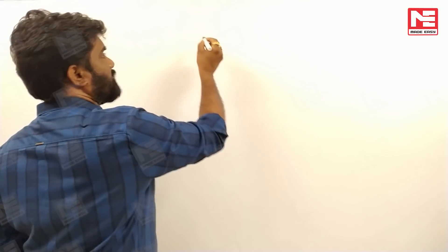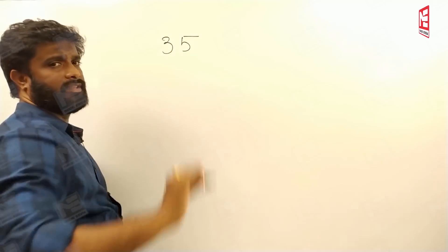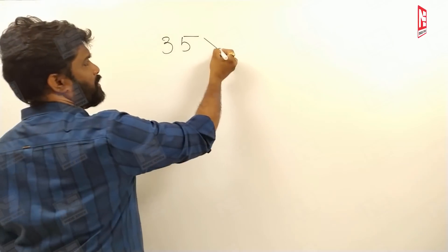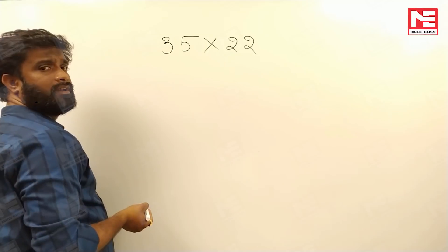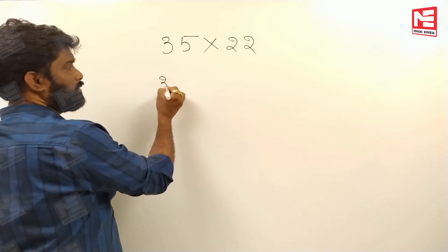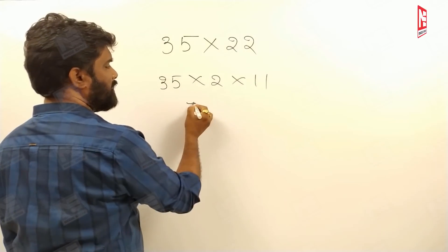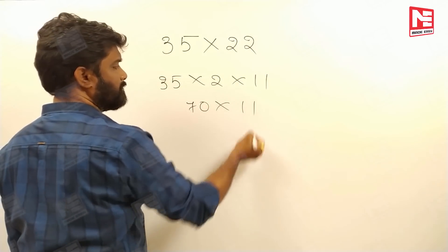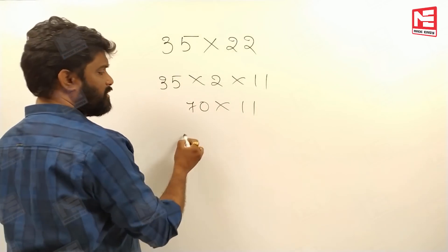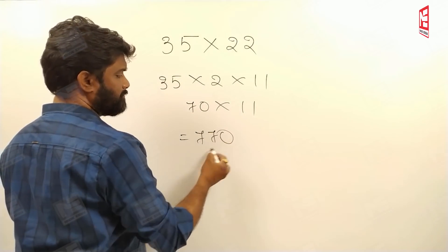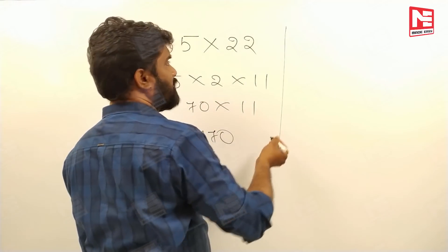Let's take the number 35 as a reference. For 35 into 22: since 22 is 2 into 11, compute 35 into 2, which gives 70, then 70 into 11. Using the trick: 0 as it is, 7 plus 0 is 7, and 7 as it is — your answer is 770.